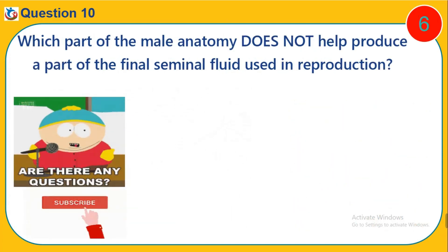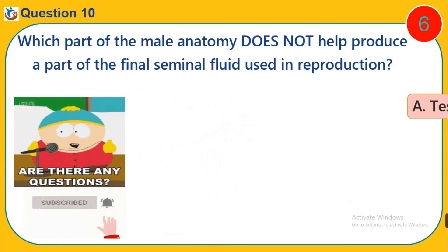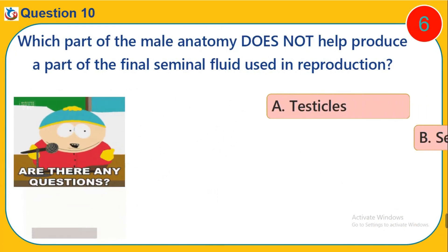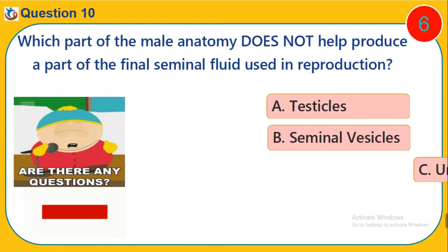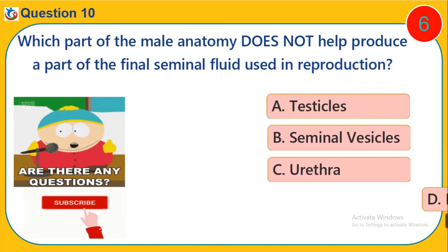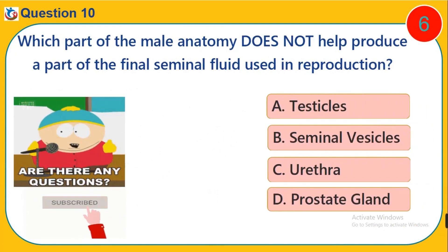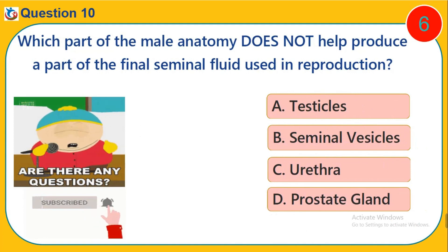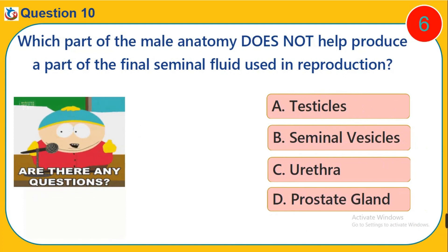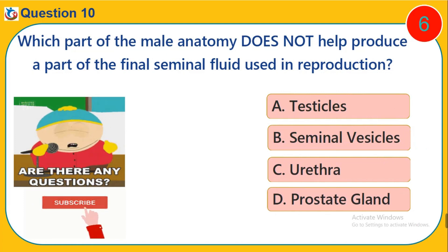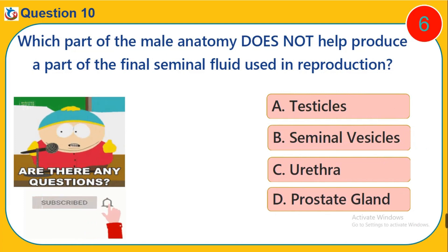Question 10. Which part of the male anatomy does not help produce a part of the final seminal fluid used in reproduction? A. Testicles. B. Seminal vesicles. C. Urethra. D. Prostate gland.